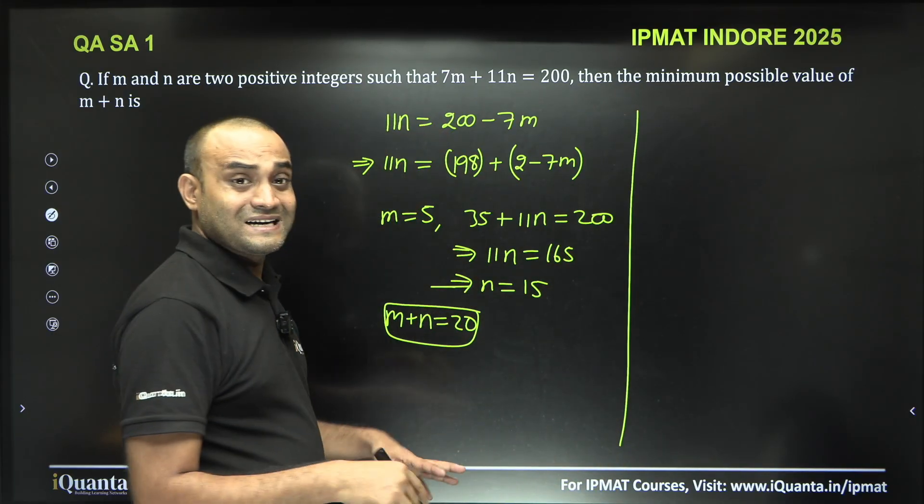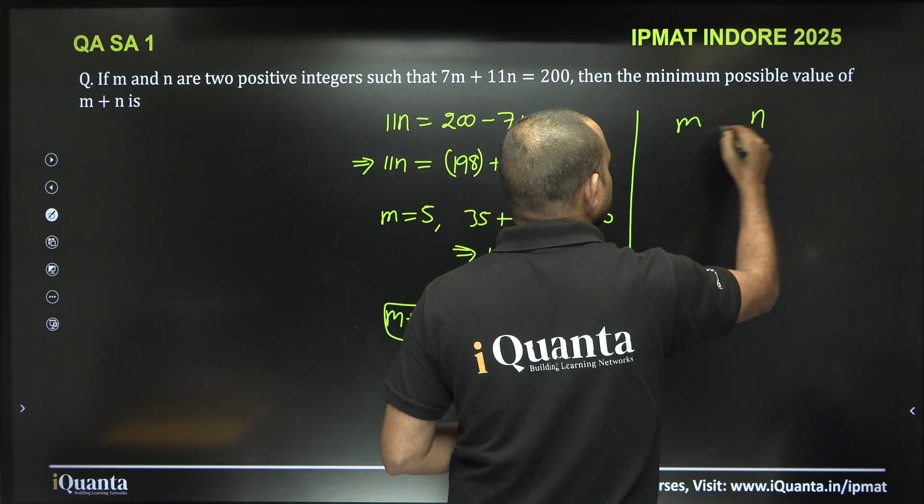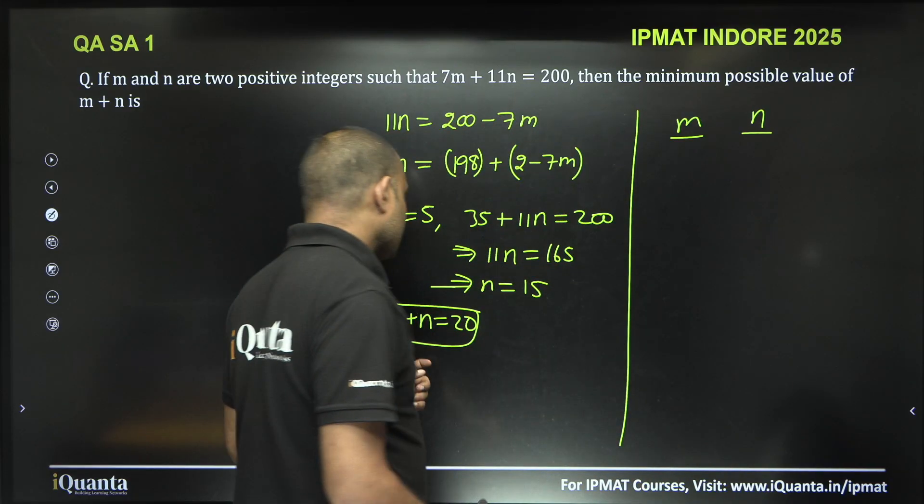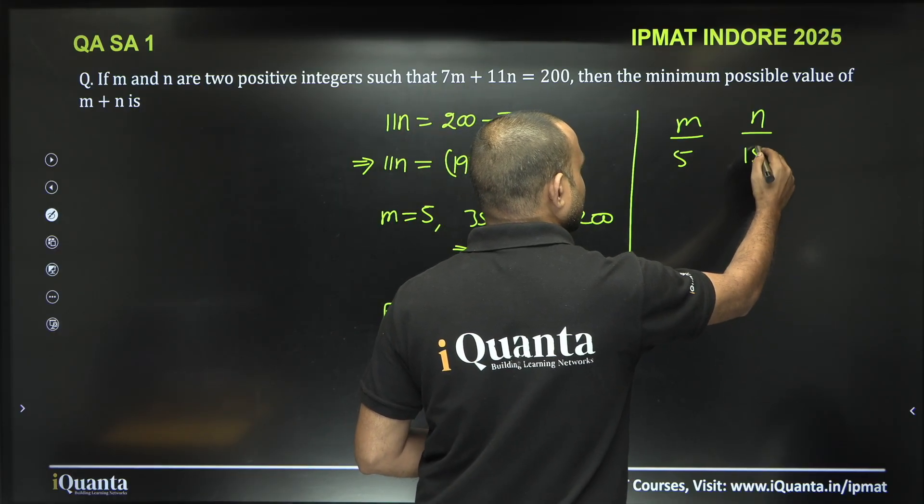Now if you want to understand it in a different way, if this is not clear to you guys, then let me tell you that one integral solution that we get here is when m is 5, n is 15.